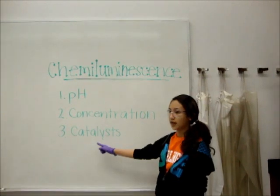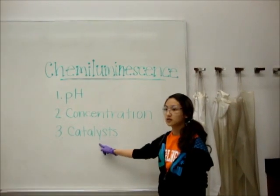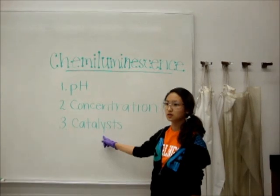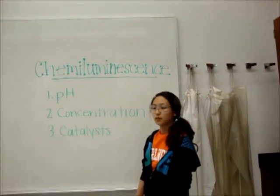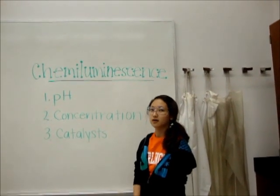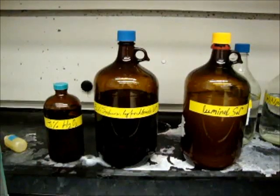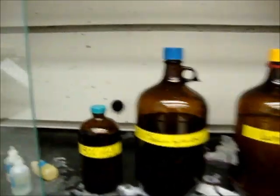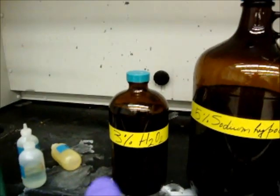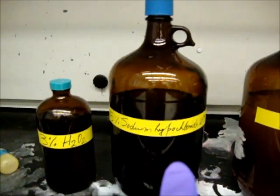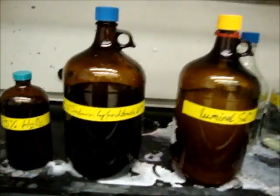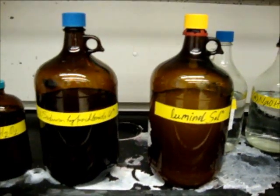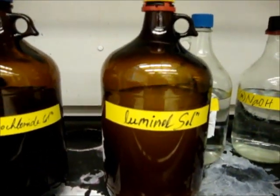And lastly, I will test for catalysts, and since catalysts speed up the reaction, we can determine which substance will make the solution the brightest and last the longest. In all of these reactions, we will use one oxidizing agent, either hydrogen peroxide or sodium hypochlorite, and then luminol. The luminol will be added last so that we can observe for any light emission.